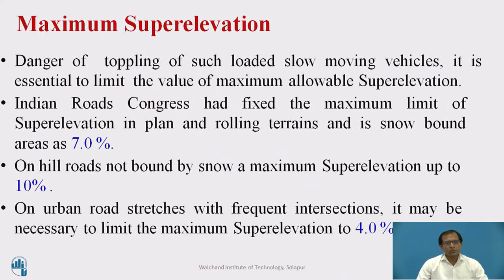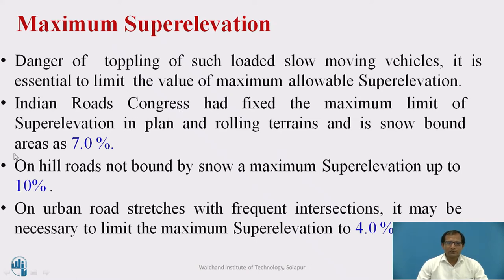Before we go for designing the super elevation, let us understand what is the maximum super elevation and minimum super elevation. Considering slow vehicles and heavily loaded slow vehicles, the maximum super elevation is restricted as per the IRC guidelines. In plain and rolling terrain, it is fixed as 7%, and in hilly terrain, we go up to a maximum of 10%. In urban sections, we design intersections with a maximum super elevation of 4%.